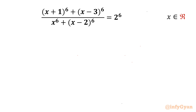Welcome back to Infigyan friends. In today's video we are having one very interesting question on rational equations. The equation is (x+1)^6 + (x-3)^6 over x^6 + (x-2)^6 equal to 2^6. We have to find out real solutions only.